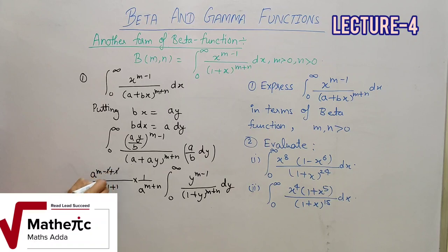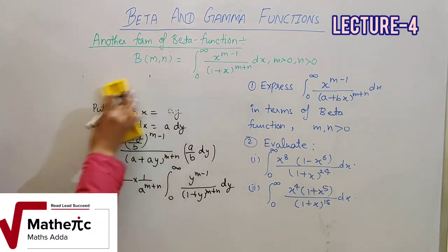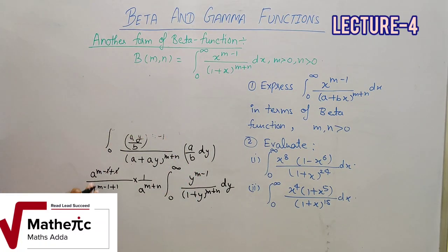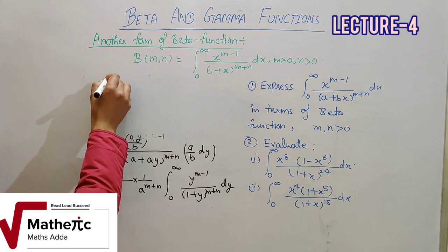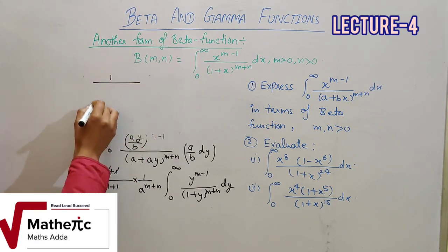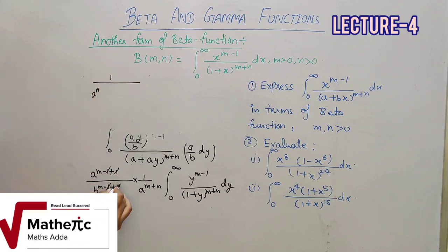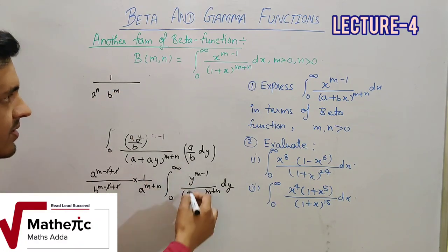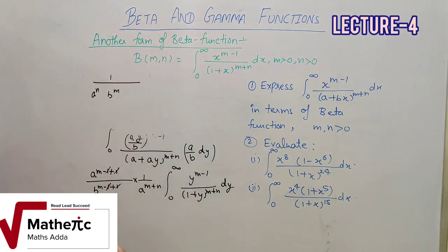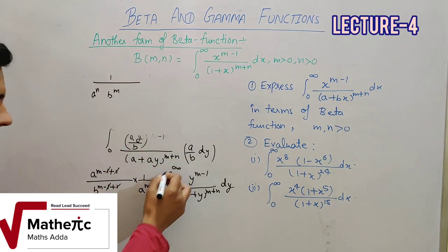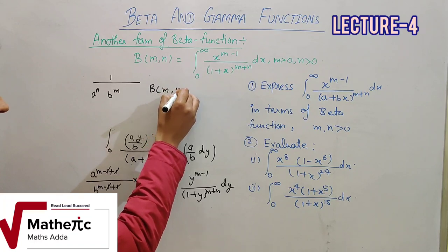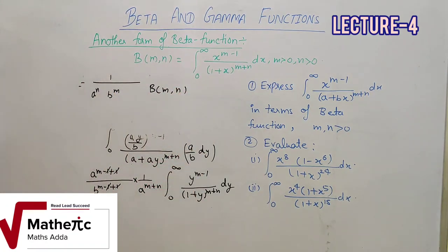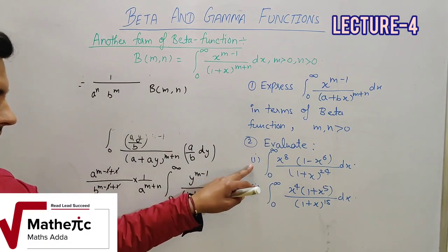1 से 1 cancel, a की power m cancel होने पर a की power n बचेगी नीचे, और b की power m बचेगी। यह integration Beta(m,n) के formula से compare करने पर — variable से कोई effect नहीं — यह Beta(m,n) का formula बन गया। इस integration को एक substitution से बड़े easily beta function में convert कर दिया।